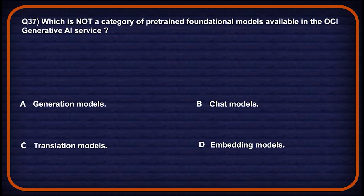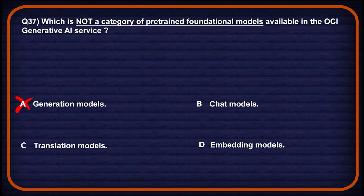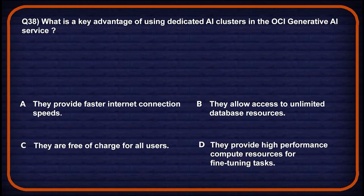Let's move on to question number 37: which is not a category of pre-trained foundational models available in OCI Generative AI services? Option A: generational models — OCI includes generational models for content creation and summarization, so not the answer. Option B: chat models — chat models are a core offering for conversational AI, so wrong. Option C: translation models — translation is not listed as a separate model category in OCI, so this might be a potential answer. Option D: embedding models are used for semantic searches and vector representation, so not correct. Option C will be the correct one.